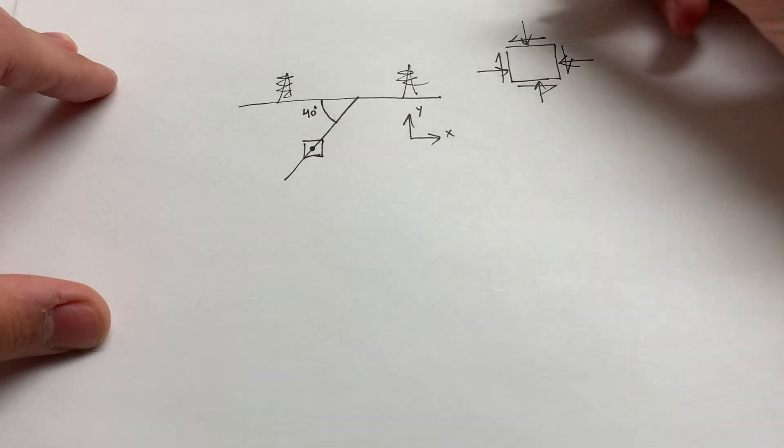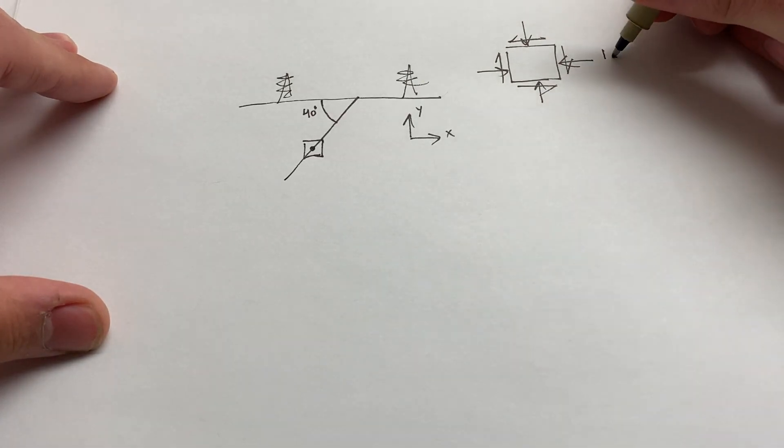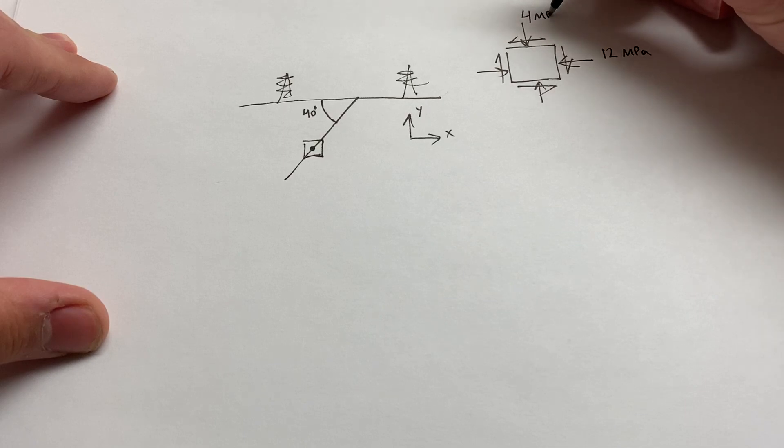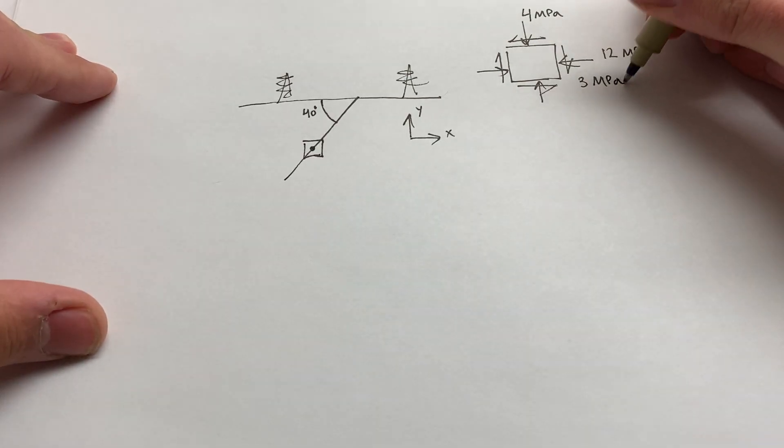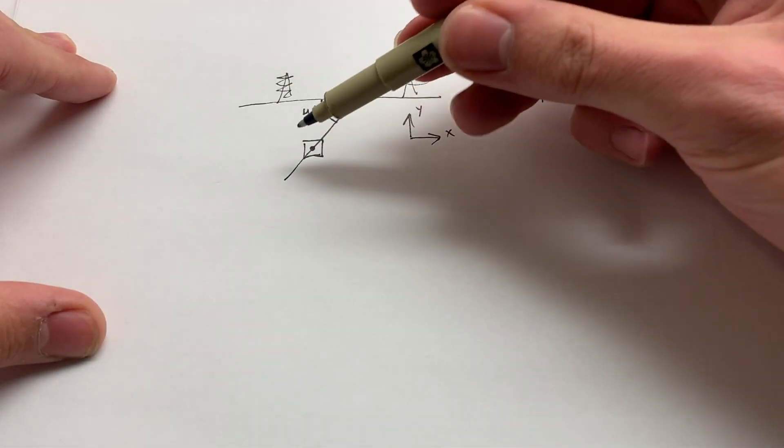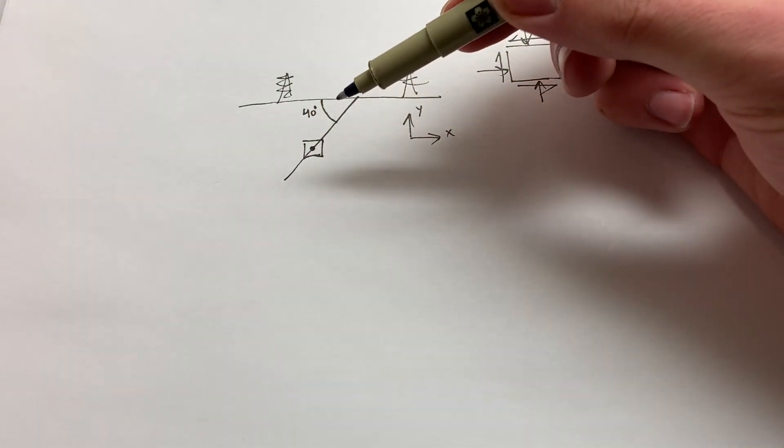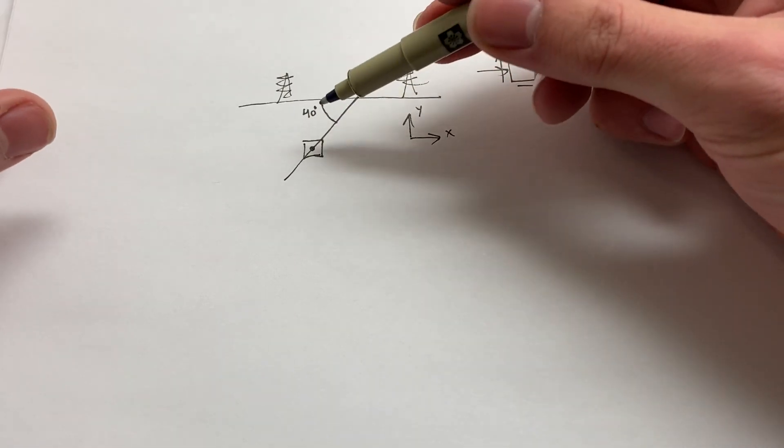And let's say you found sigma X to be 12 megapascals, sigma Y to be 4 megapascals, and tau XY to be 3 MPa. With that, you can rotate them to pretty much any orientation you want and determine the stresses on them. And in this case, we would say, well, we want the stresses acting in the direction of that fault along that 40 degrees.